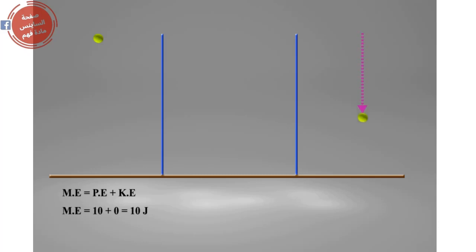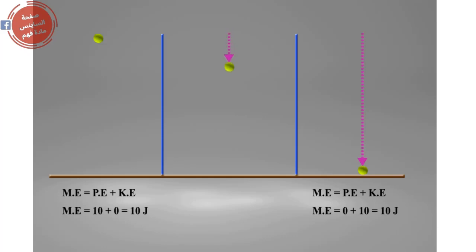Then assume that the kinetic energy equals 10 joules when the ball hits the ground. So in this case, the potential energy equals zero and the mechanical energy is equal to the kinetic energy, which equals 10 joules.